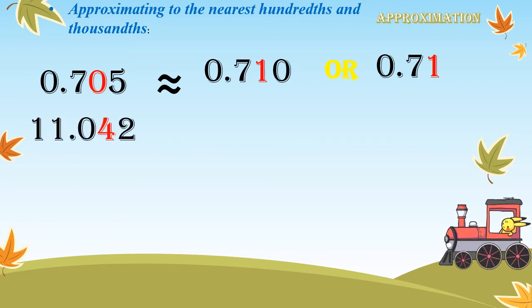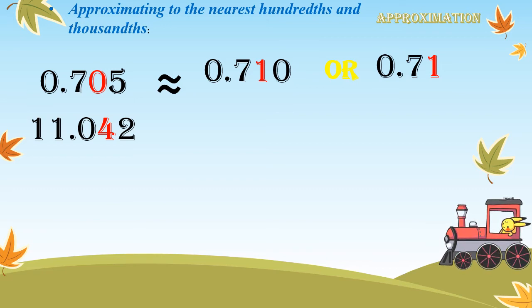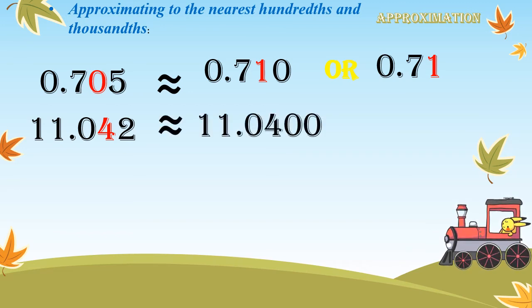Another question: 11 and 42 thousandths. I wanted to approximate to the nearest hundredth. Find your number — where is the hundreds place? It's a 4, underline it. Look right next door — the digit is 2 in the thousandths place. Four or less? Just ignore. So I will keep 4 as it is and replace 2 with zero. Remove the trailing zero if you don't need it. The answer will be 11 and 4 hundredths.